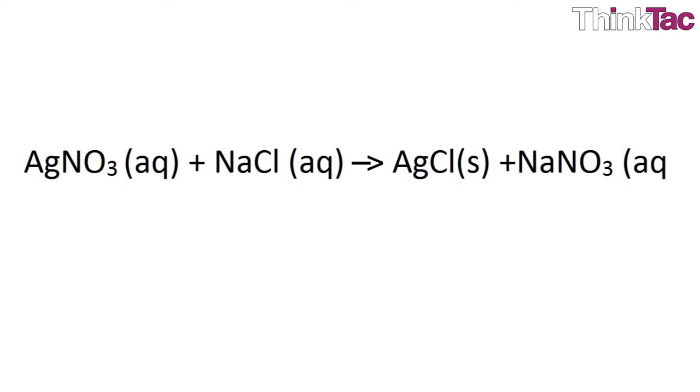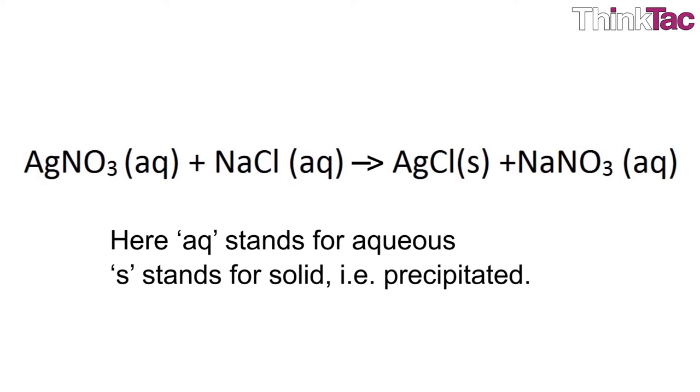An example of such a reaction could be silver nitrate and sodium chloride to give silver chloride and sodium nitrate. Here you'll notice that silver nitrate is in the aqueous form as well as the sodium chloride, whereas silver chloride gets precipitated as a solid and sodium nitrate remains in solution.